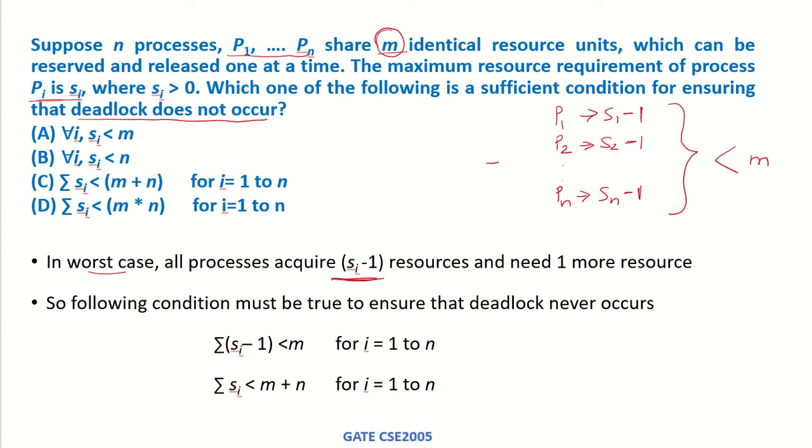That means the sum of all these resources that each of these processes are holding should be less than m. So this is the condition to be ensured that deadlock never occurs: the sum of all of these for i equals 1 to n, for all the processes, should be less than m.